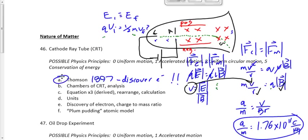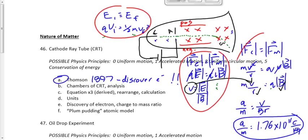Be prepared to do this: the velocity selector, the main chamber, and be prepared to combine them — especially these two. We often have to solve for speed using the velocity selector and plug that into the main chamber equation to end up solving for the charge-to-mass ratio or something else.